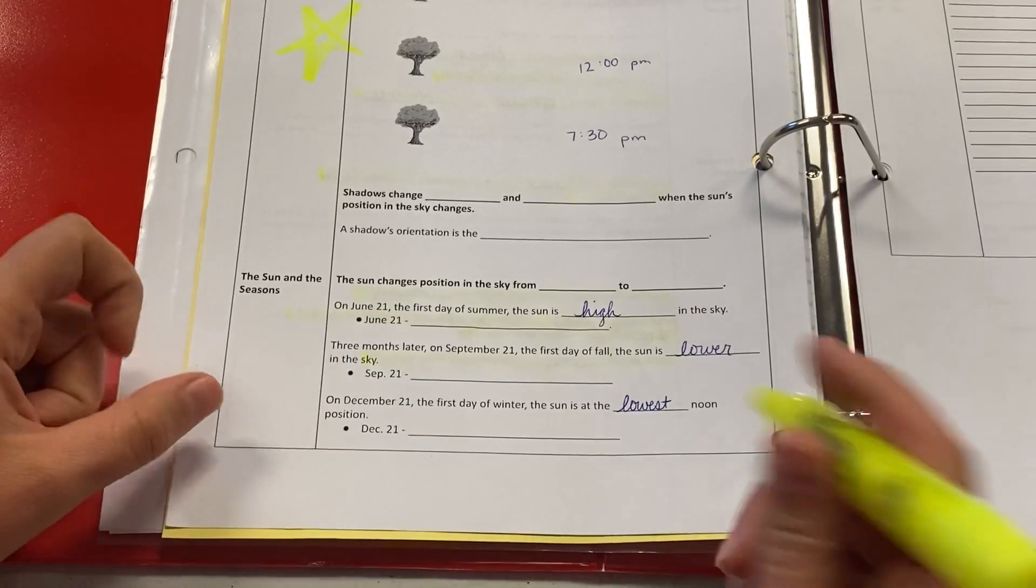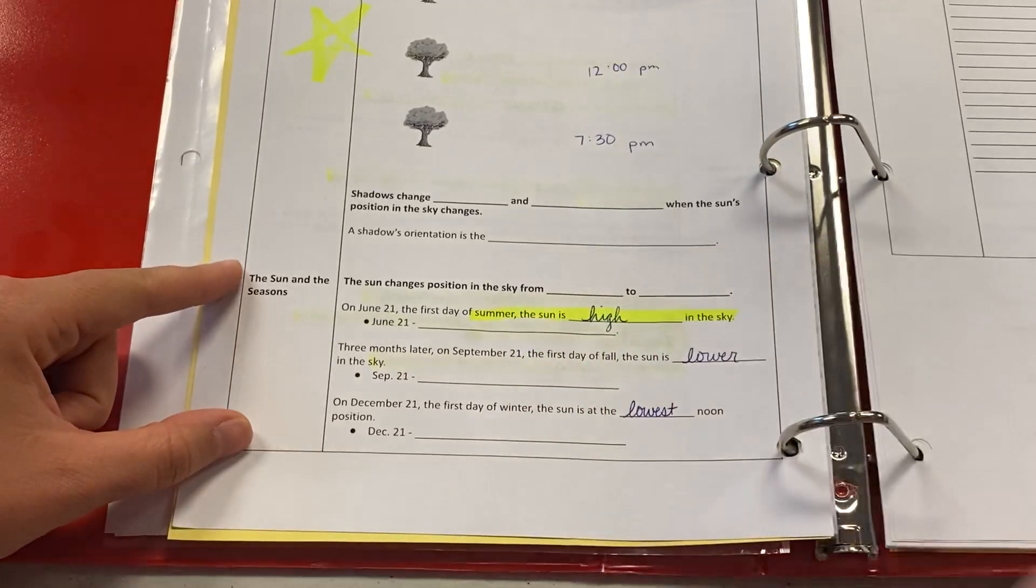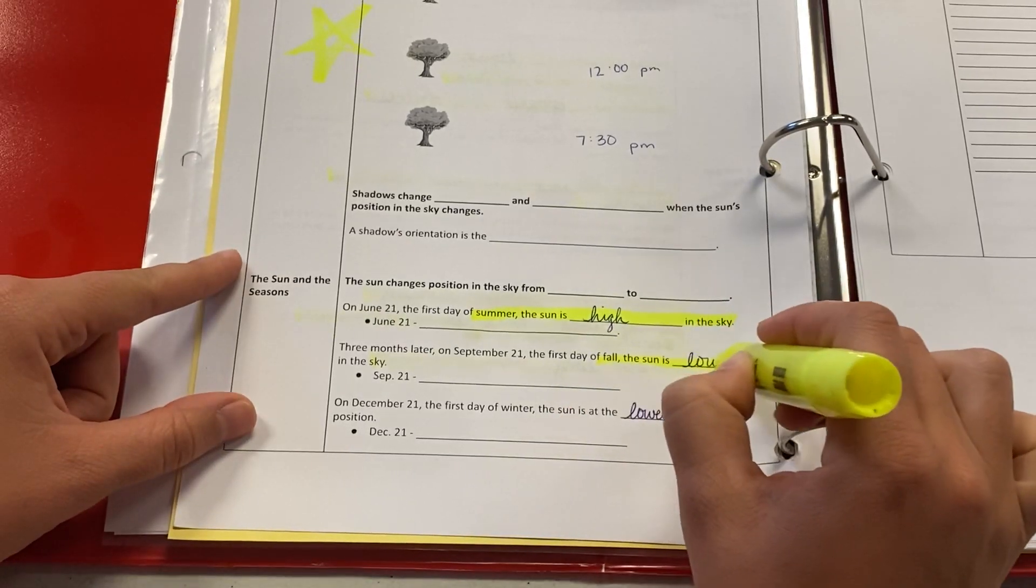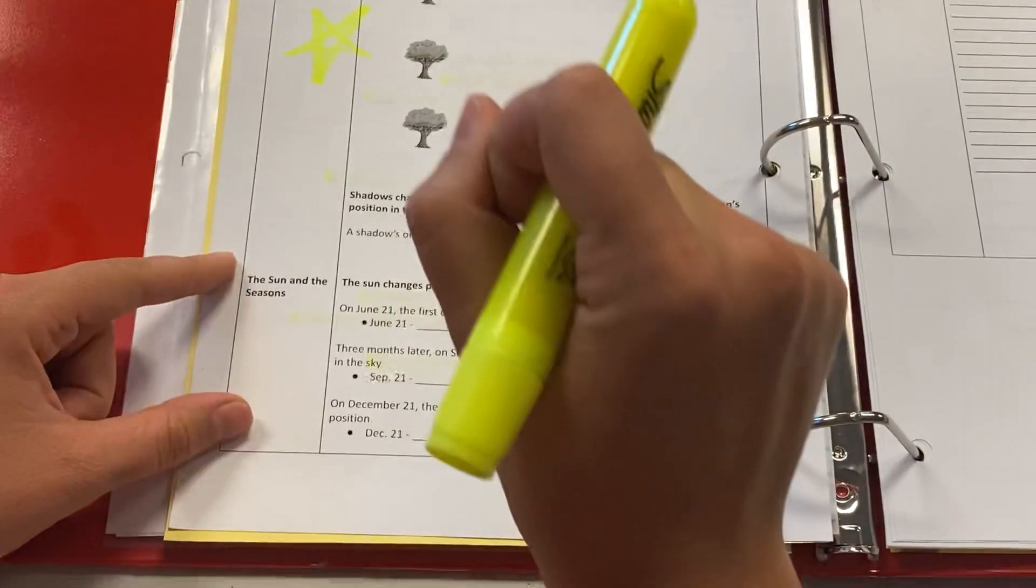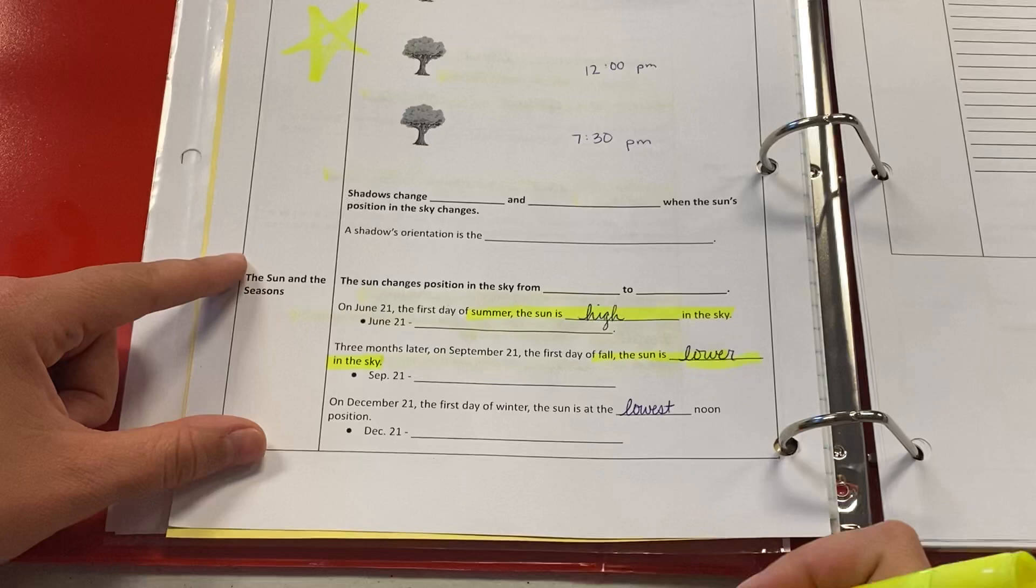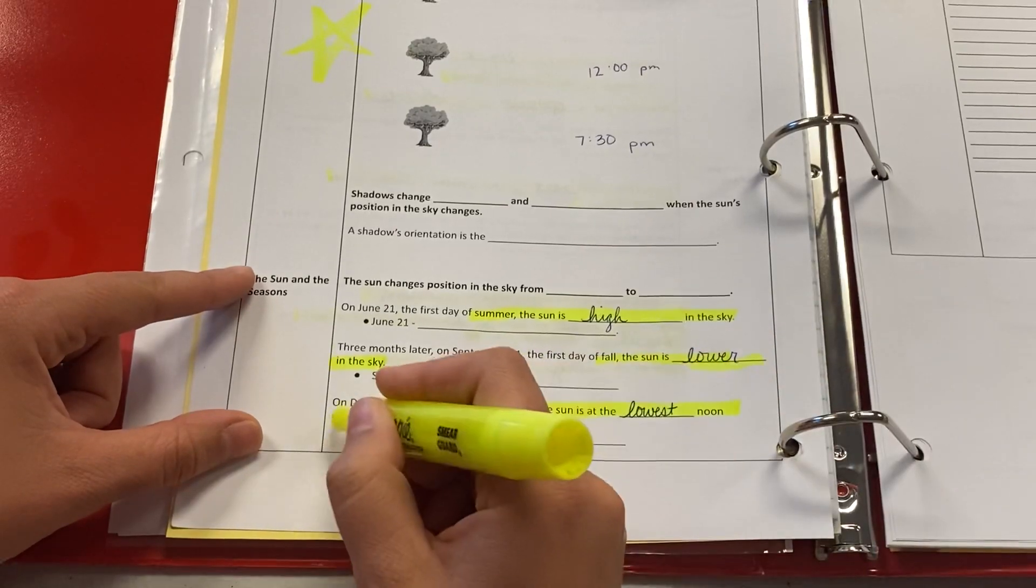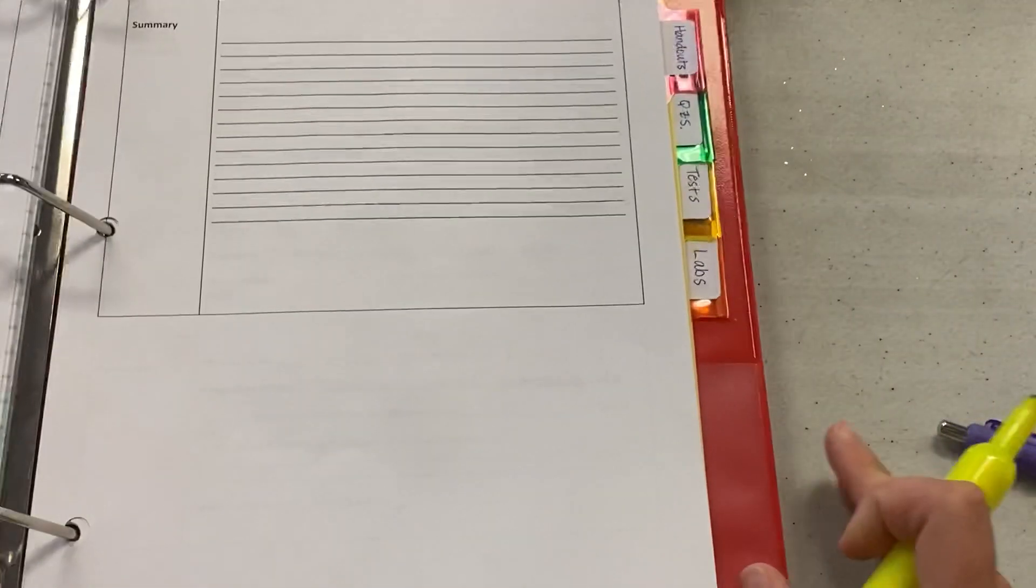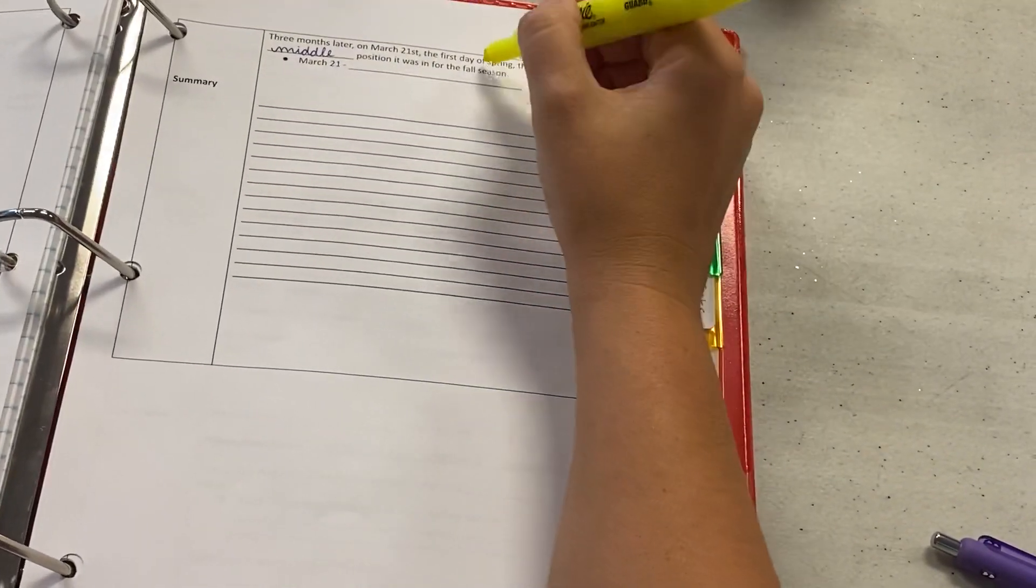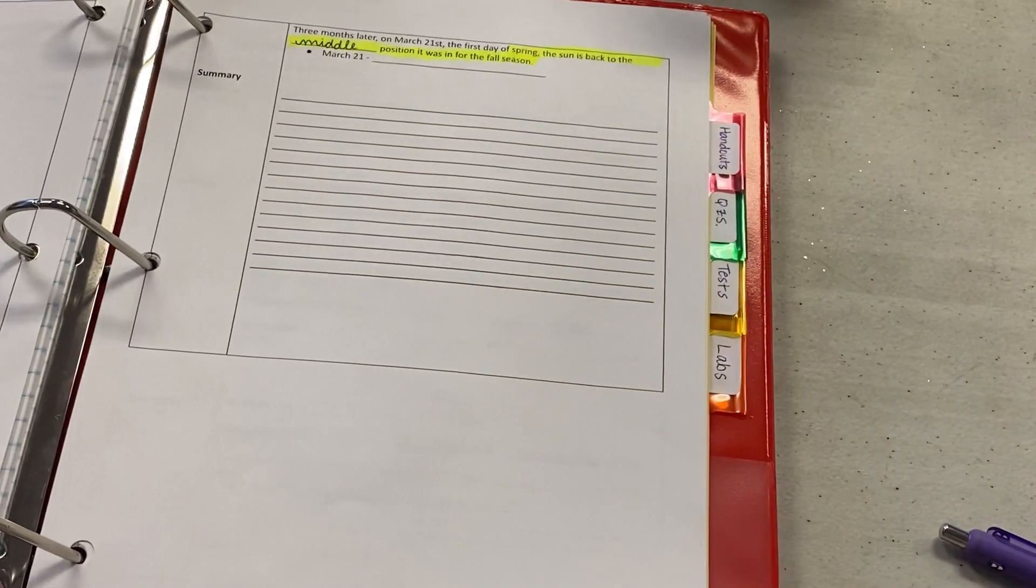So you need to know that in summer, the sun is high in the sky. Then in fall, it's a little bit lower. It's still going to go from east to west, just a little bit lower in the sky, not maybe directly overhead. So in the fall, the sun is lower in the sky. Then you need to know that in the winter, it is at its lowest noon position. And in the spring, the sun is back to the middle position that it was for the fall as well.